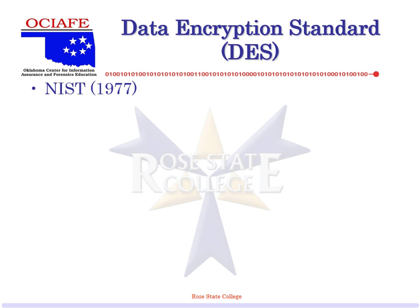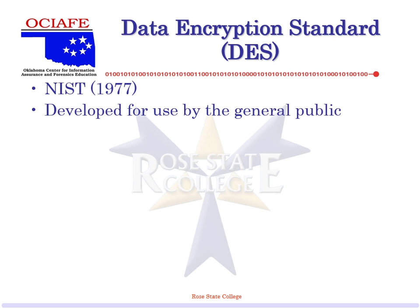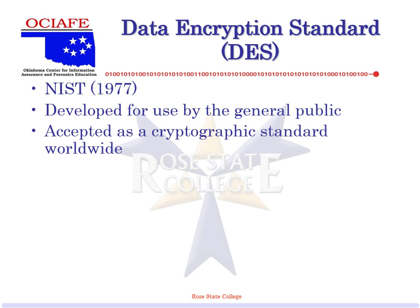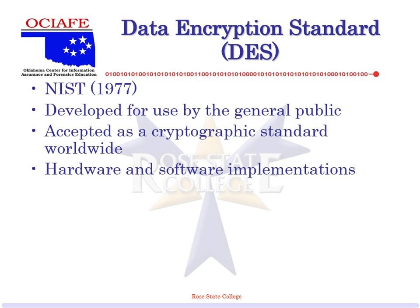1977 is when NIST adopted this. Developed for use by the general public — it's actually still used to this day. Accepted as a worldwide standard, with both hardware and software implementations. Which one is faster — hardware or software? Hardware is always faster. If you see a question on a test that says which one is faster, the answer is hardware.